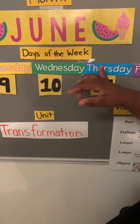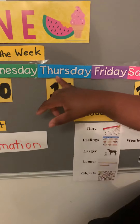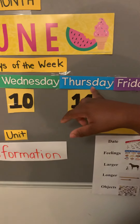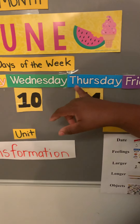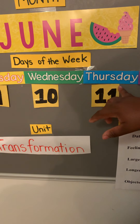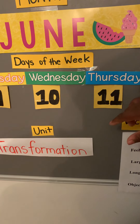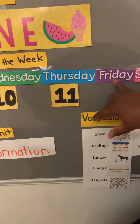All right, what day of the week is it? So yesterday was Thursday — if yesterday was Thursday, then today must be Friday!